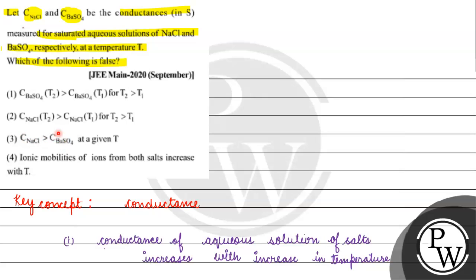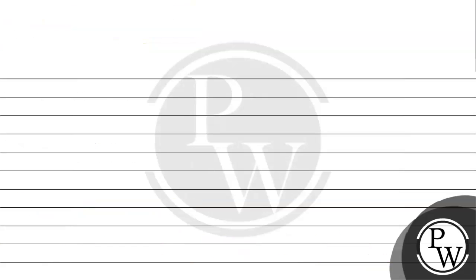If we talk about the third option, conductance of NaCl is greater than conductance of BaSO4 at a given temperature, this statement is correct. Why is it correct? NaCl is a strong electrolyte, it basically dissociates into Na+ and Cl-. Barium sulfate is a weak electrolyte, we have not put it in ions.